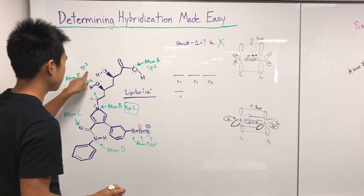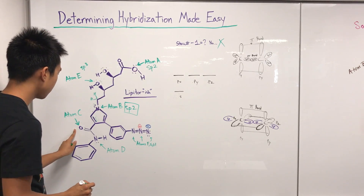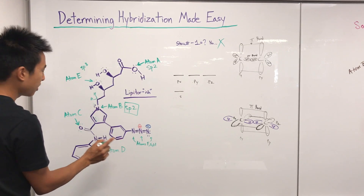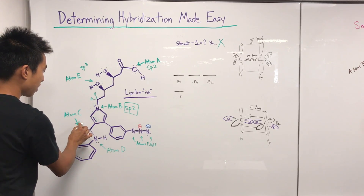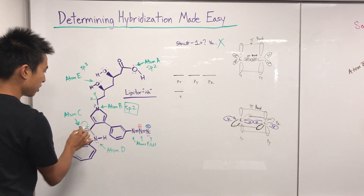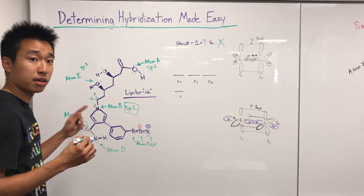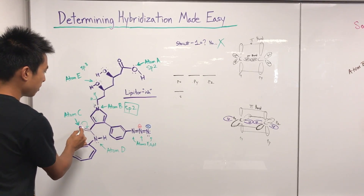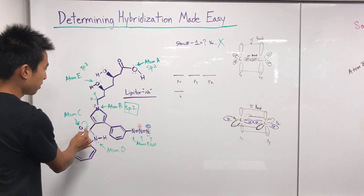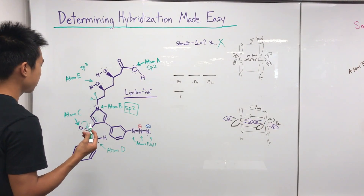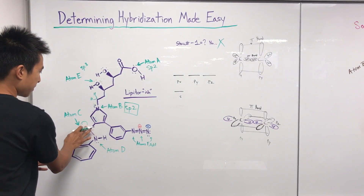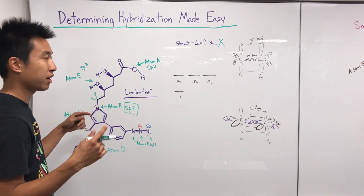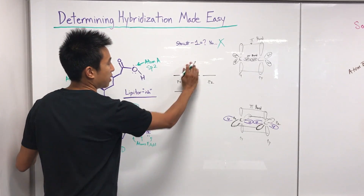Atom C — this oxygen already has a double bond, so it already has one pi bond. A common mistake is thinking this electron can come down to form another, but carbonyls — C=O — can only draw electrons up, not send them down. Also, pushing electrons down would overload that carbon with too many bonds. So this oxygen is stuck with one pi bond at maximum. Py is sacrificed, leaving s and two p's — atom C is sp2.